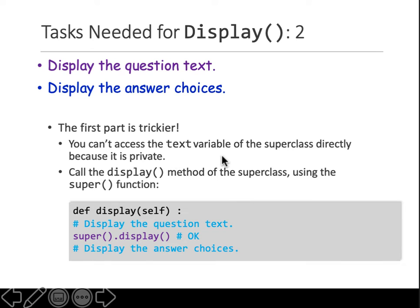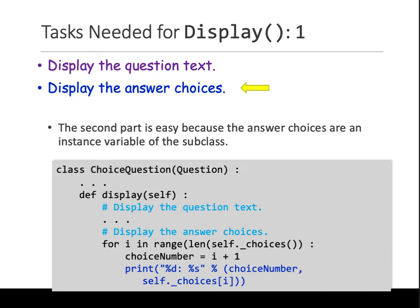Since we can't access the text variable because it's in the super class, to call that method of the super class or to get to that variable, you call the method using the same convention we used for the constructor. Any method you want to call from the parent class, use the keyword super, empty parentheses, dot, name of the function, and any parameters if needed. It will first display the question text from the parent class, then it's followed by the answer choices.